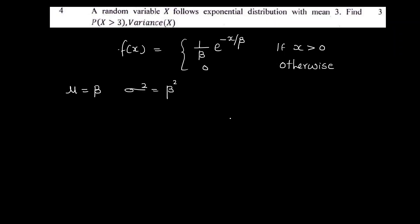Now, what is the probability of x greater than 3? The mean is equal to 3, that means mu is equal to beta is equal to 3. The probability of x greater than 3: since the exponential distribution is continuous, the probability is expressed as an integral.